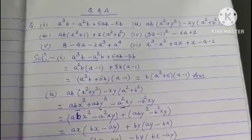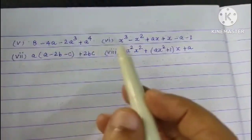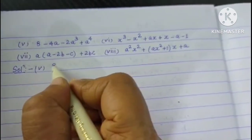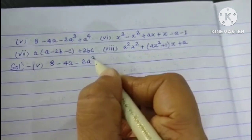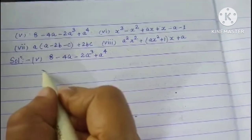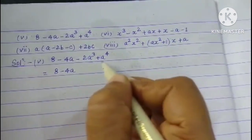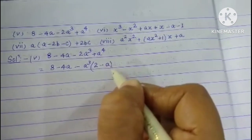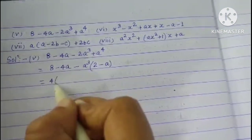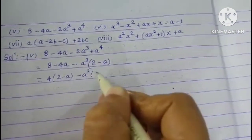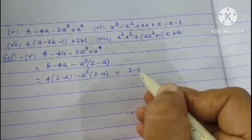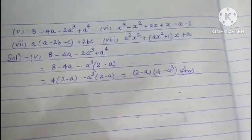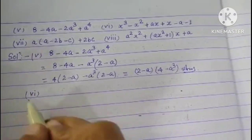Fifth question: 8 - 4a - 2a³ + a⁴. Grouping: (8 - 4a) and (-2a³ + a⁴). From the first group take 4 common: 4(2 - a); from the second take a³ common: a³(-2 + a) = a³(a - 2) = -a³(2 - a). So (2 - a) is common: (2 - a)(4 - a³).